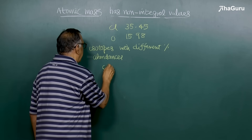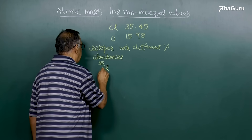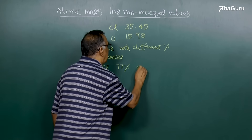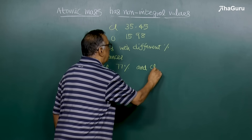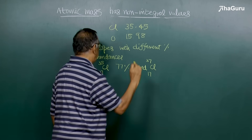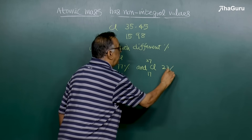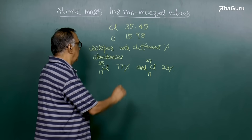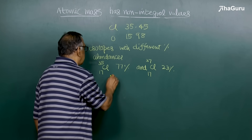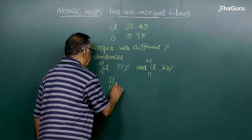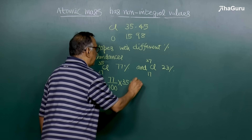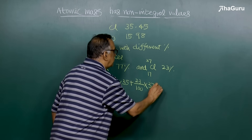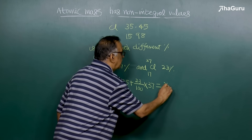If I take chlorine: chlorine with mass number 35, atomic number 17, is present to the extent of 77%, and the other one, chlorine with mass number 37, atomic number 17, is present to the extent of 23%. So the average atomic mass, which is the weighted average of these two isotopes, is (77/100) × 35 + (23/100) × 37, which works out to approximately 35.45.